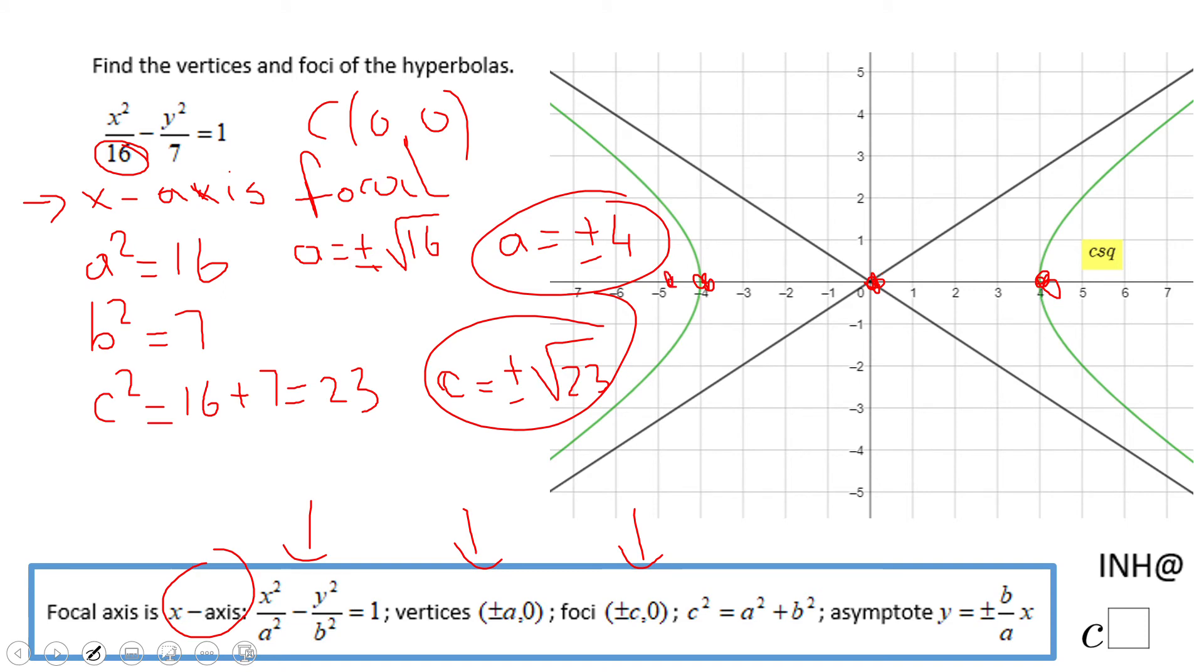If you notice here we have one more thing for this hyperbola which we call asymptotes. These are the asymptotes and they have the same meaning like any other asymptotes you talk about. This hyperbola goes asymptotic to these asymptotes.